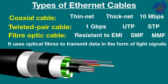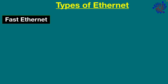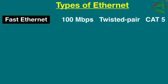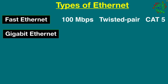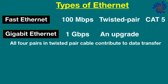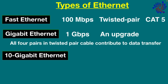Now let's get into the types of Ethernet. Fast Ethernet can transmit or receive data at about 100 megabits per second and is usually supported by twisted pair or Cat5 cable. Gigabit Ethernet transfers data at a higher speed of about 1 gigabit per second and is an upgrade from Fast Ethernet, which is slowly being phased out. In Gigabit Ethernet, all four pairs in the twisted pair cable contribute to the data transfer speed. 10 Gigabit Ethernet is an even more advanced network type with data transfer speeds of 10 gigabits per second.